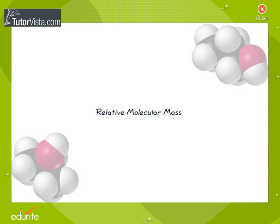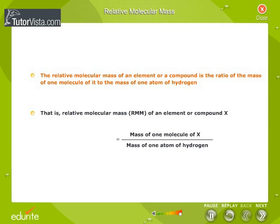Relative Molecular Mass. The relative molecular mass of an element or a compound is the ratio of the mass of one molecule of it to the mass of one atom of hydrogen. That is, the relative molecular mass or RMM of an element or compound X is equal to the mass of one molecule of X over the mass of one atom of hydrogen.